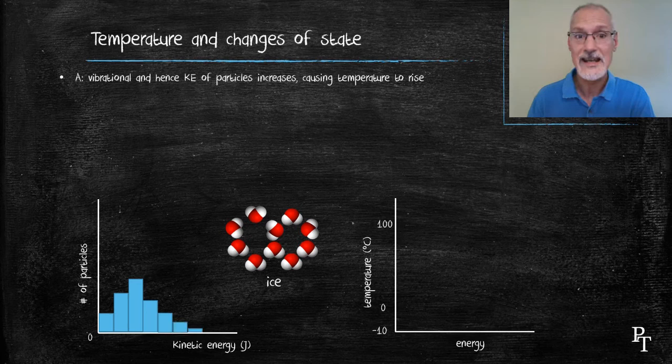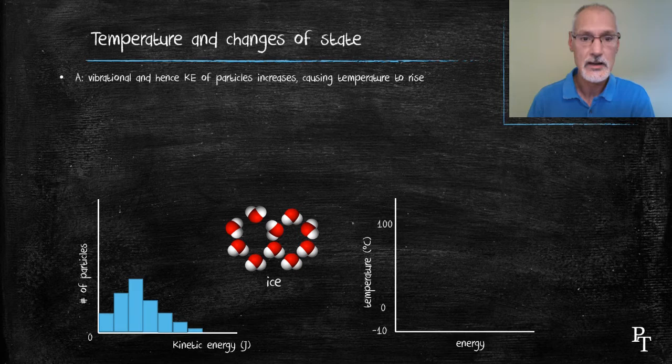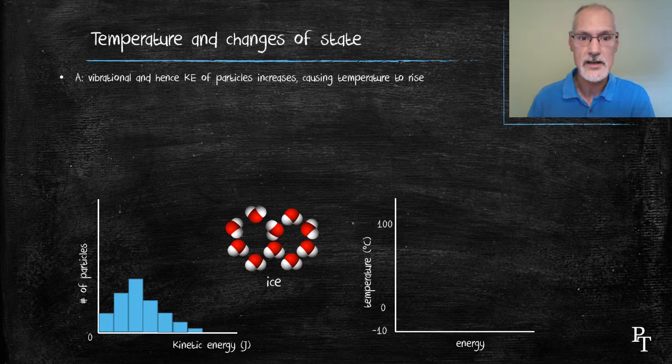And so we have a distribution of speeds or vibrations within our substance, and hence a distribution of kinetic energies. All the particles don't have but one kinetic energy. Here's a wide distribution, like there might be marks in a class. And somewhere there would be a representative average kinetic energy. Temperature is a measure of that average kinetic energy.